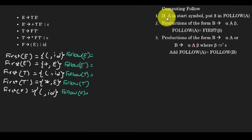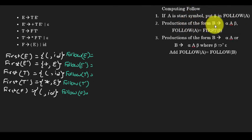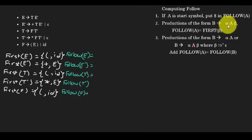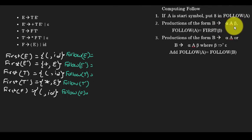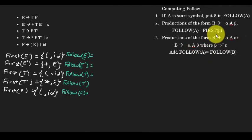For computing follow sets, there are three rules. First, if A is the start symbol, put dollar in follow of A. Second, if there is a production of the form alpha A beta, then follow of A includes first of beta. Alpha and beta can be terminals, variables, or a combination. Third, if there is a production of the form alpha A — meaning beta is epsilon — then follow of A includes follow of the left-hand side variable.